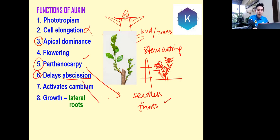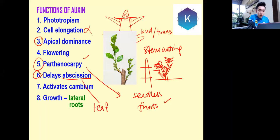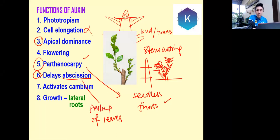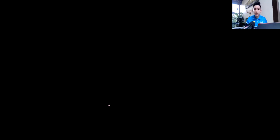One more word: abscission is the dropping of leaves. Delay abscission — students sometimes take a while to adapt to this word. I'll ask: is delay abscission a good or bad thing? The answer is it's a good thing, because leaves falling is not desirable. Delaying it is a good thing — we don't want the leaves to fall so quickly.